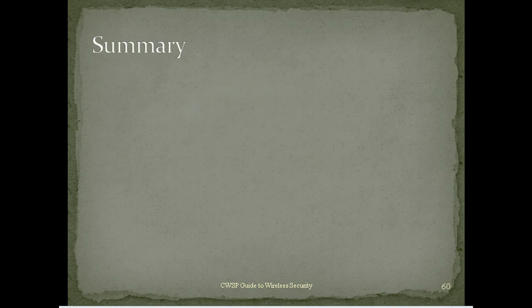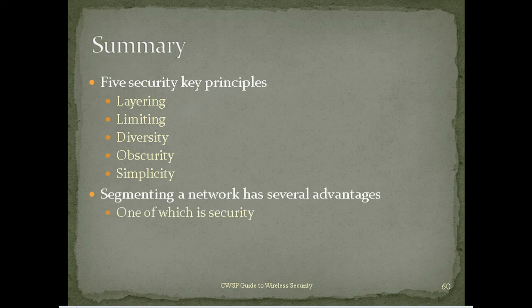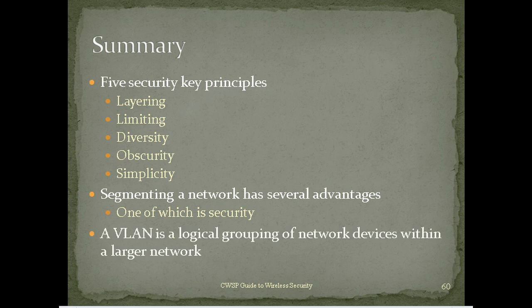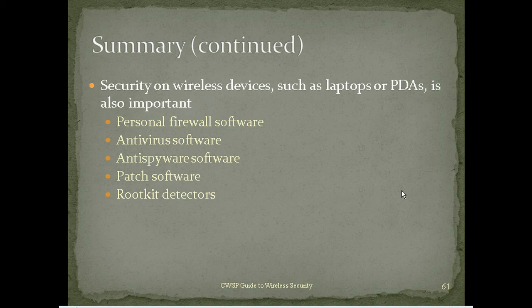In summary: the five security principles are layering, limiting, diversity, obscurity, and simplicity. Segment your networks — preferably at layer 3 with subnets; layer 3 switches can help enormously. VLANs can isolate different workgroups, though they won't stop everything — they're part of the defense in depth. For wireless device security, use firewalls, antivirus, anti-spyware, patch software, and rootkit detectors. Much of this applies not just to wireless devices but to network devices in general. Thank you for watching.